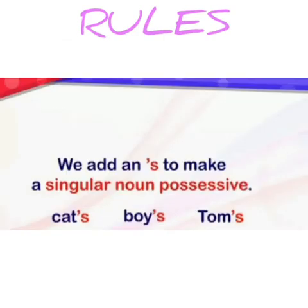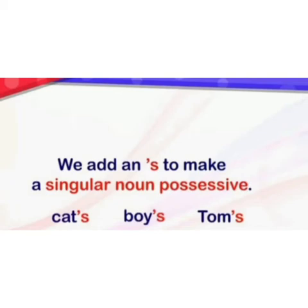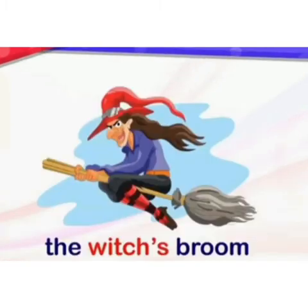Now we need to follow certain rules to form possessive nouns. Rule 1: We add an apostrophe S to make a singular noun possessive. For example: cat's, boy's, Tom's — and the witch's broom.